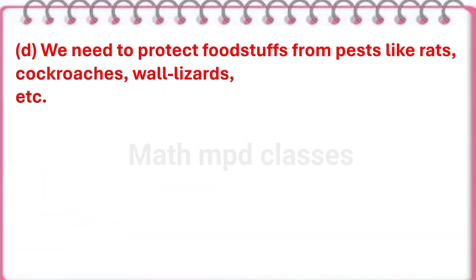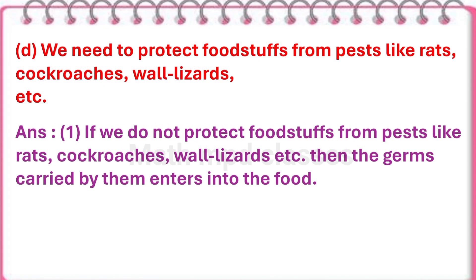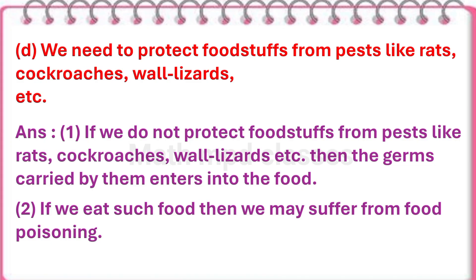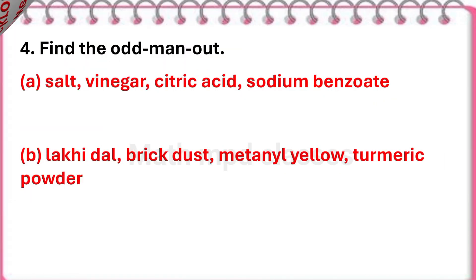Next question: We need to protect foodstuffs from pests like rats, cockroaches, and wall lizards. Answer: If we do not protect foodstuffs from pests like rats, cockroaches, wall lizards, etc., then the germs carried by them enter into the food. If we eat such food, then we may suffer from food poisoning.